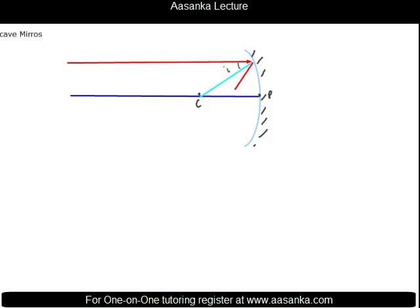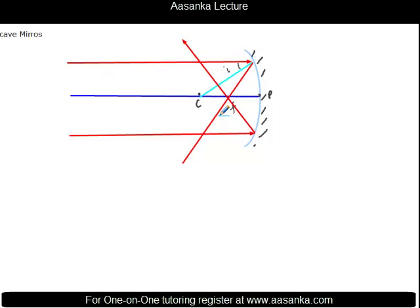The reflected ray cuts the principal axis again, and that cutting point is the focus. So any ray coming from infinity gets reflected and passes through the focus. Rays coming from infinity converge at a point. This image can be taken on a screen, therefore the image is real and inverted. It is also highly diminished because the energy is coming from infinity, and the image is formed at the focus.